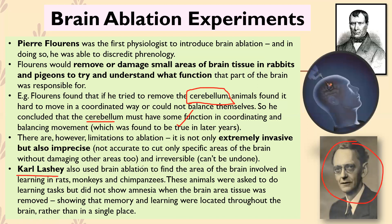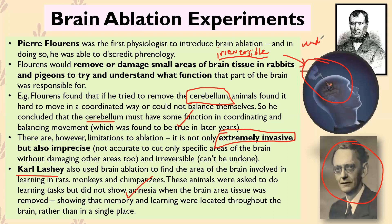Karl Lashley used brain ablation on rats, monkeys, and chimpanzees and found that when certain brain areas were damaged, these animals were less able to engage in learning and memory. He also found it wasn't just one area involved, but multiple areas — for example, damaging both the side and front of the brain both affected learning and memory. One major issue with ablation is that it's extremely invasive: you're physically interfering with and destroying parts of the brain, and that damage — especially in humans — can be irreversible and permanent.